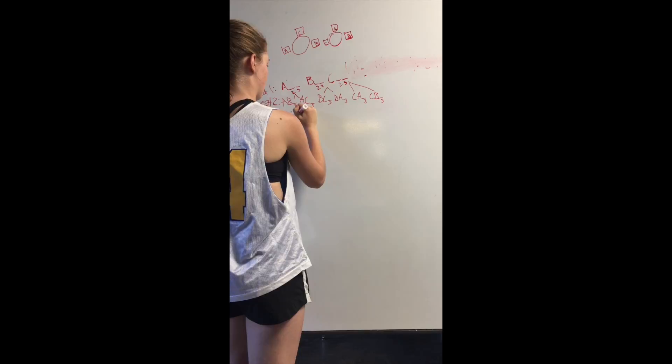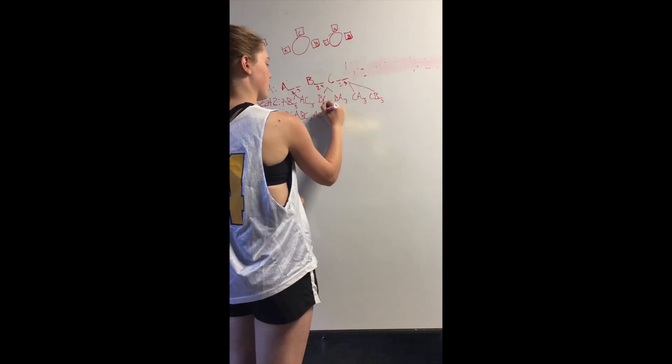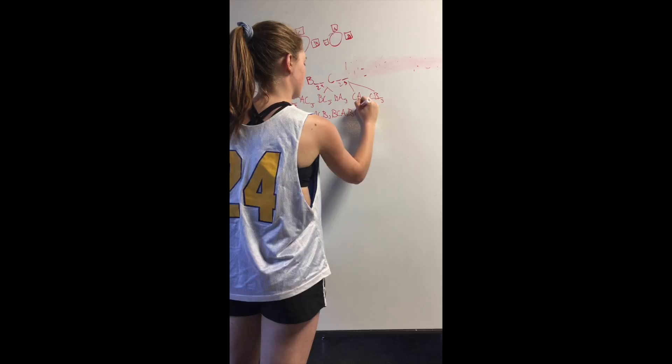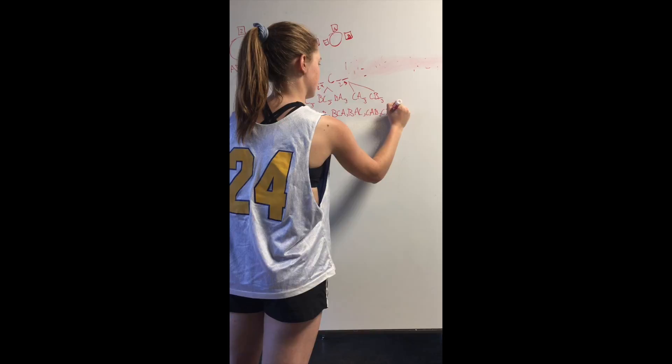So we'll have seat 1, 2, and 3 all put together. A, B, and then the only person left would be C. A, C, B. B, C, A. B, A, C. C, A, B. C, B, A. So those are the six combinations.